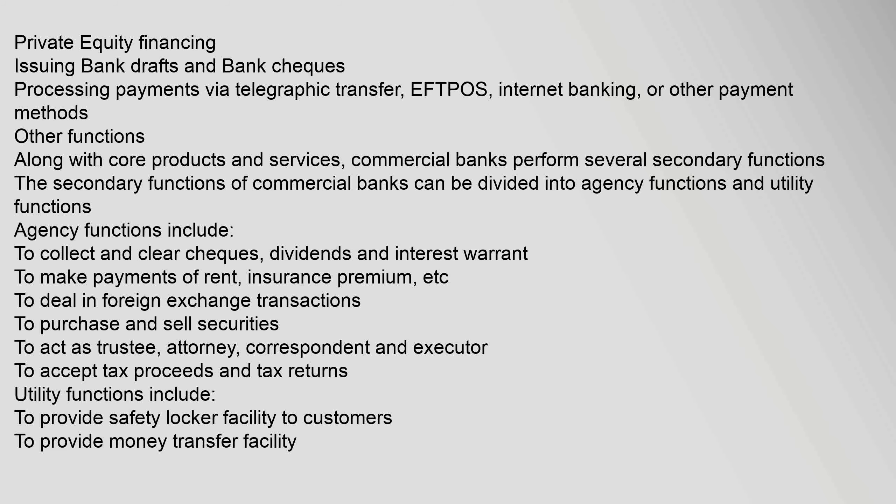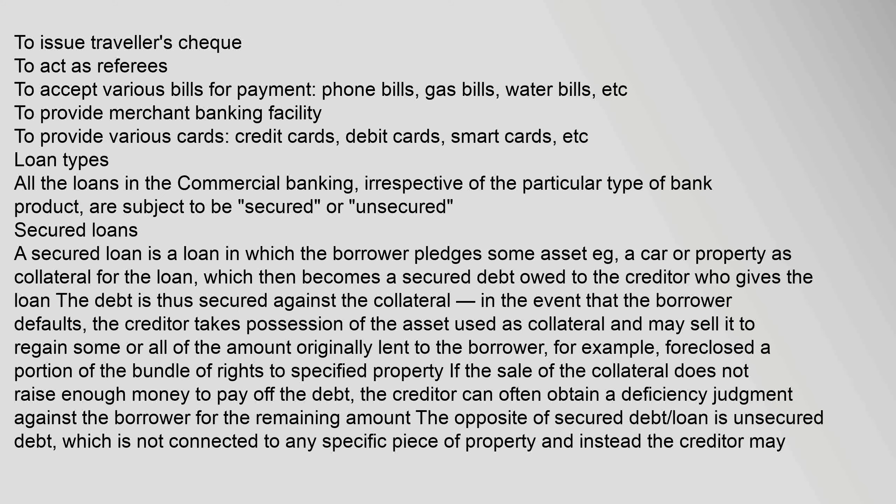Along with core products and services, commercial banks perform several secondary functions, divided into agency functions and utility functions. Agency functions include: collecting and clearing checks, dividends, and interest warrants; making payments of rent, insurance premiums, etc.; dealing in foreign exchange transactions; purchasing and selling securities; acting as trustee, attorney, correspondent, and executor; and accepting tax proceeds and tax returns. Utility functions include: providing safety locker facilities; providing money transfer facilities; issuing travelers checks; acting as referees; accepting various bills for payment such as phone, gas, and water bills; providing merchant banking facilities; and providing various cards such as credit cards, debit cards, and smart cards.